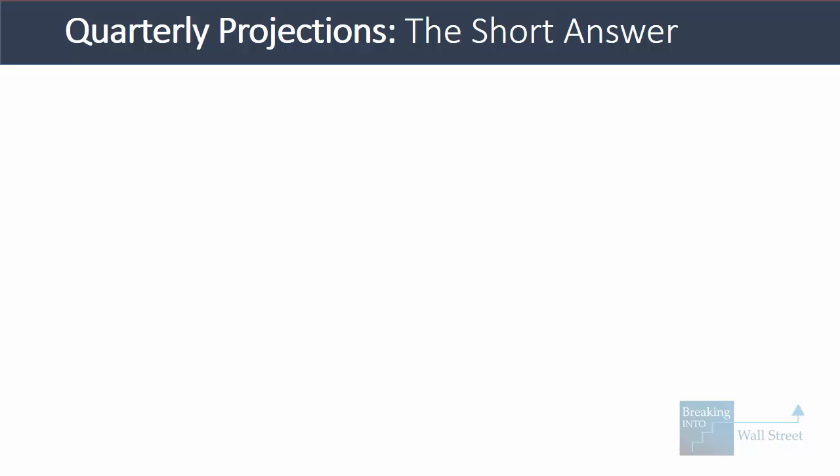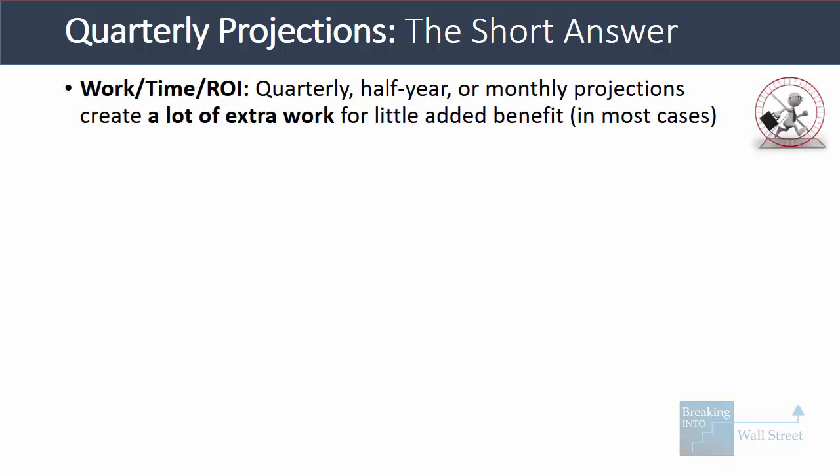There are basically two reasons for that. I'm going to give you the short answer and explanation here, and then we're going to go into a longer explanation and look at how quarterly projections differ after this. So reason number one is that quarterly, half-year, or monthly projections create a lot of extra work for relatively little added benefit in most cases.